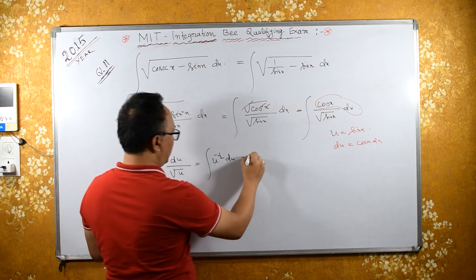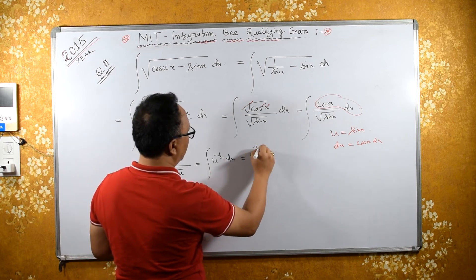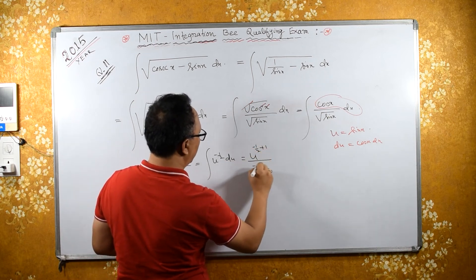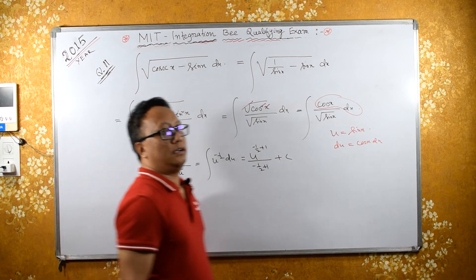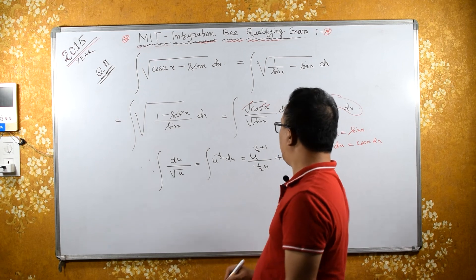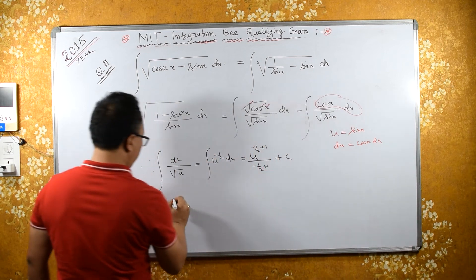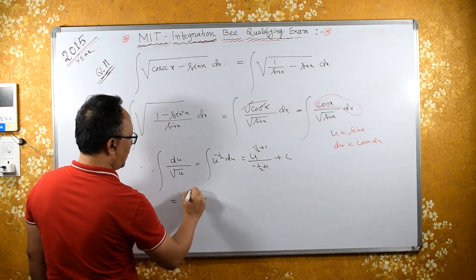Integration is u raised to minus half plus 1, upon minus half plus 1, plus some constant. Minus half plus 1 is half. This is the same as u raised to half, then half.